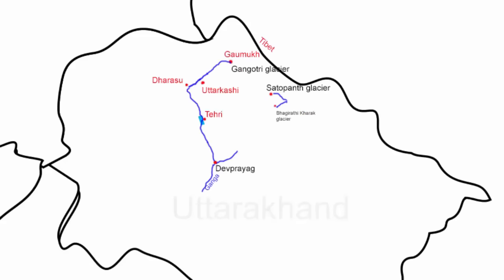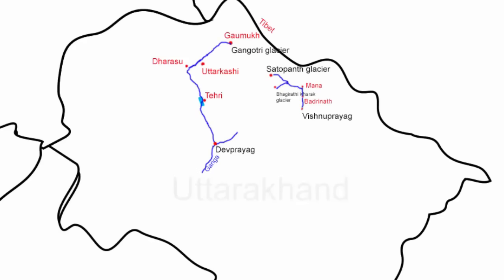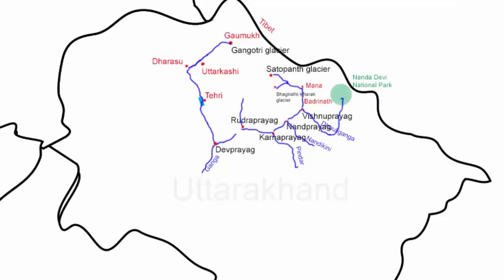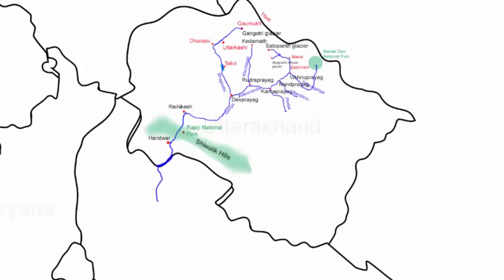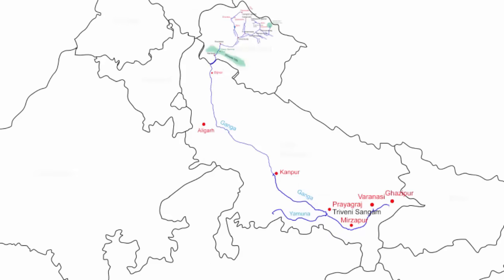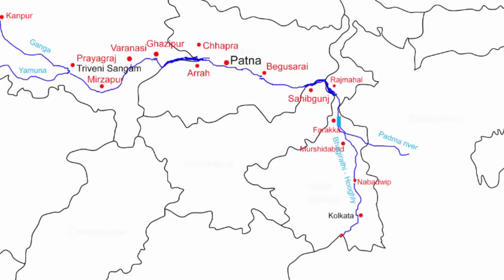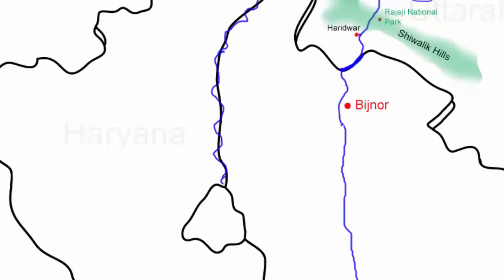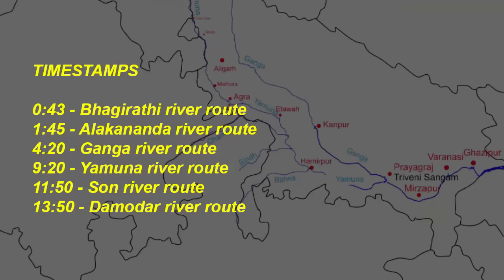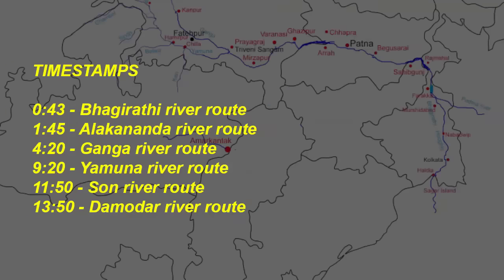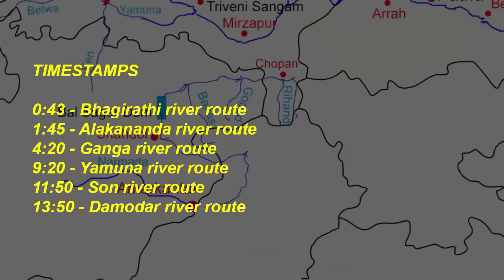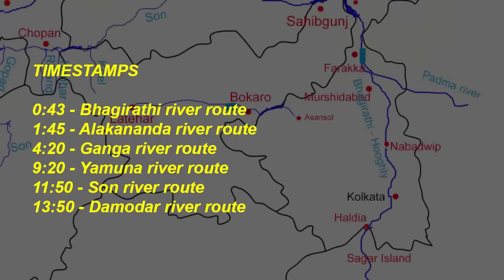In this video we are going to learn about the river Ganga and its right bank tributaries. I'm going to show you the exact place of their origin to the place where they drain, and also in between a few important places where the rivers pass by. Timestamps are available in the description if you want to skip over and save some time.